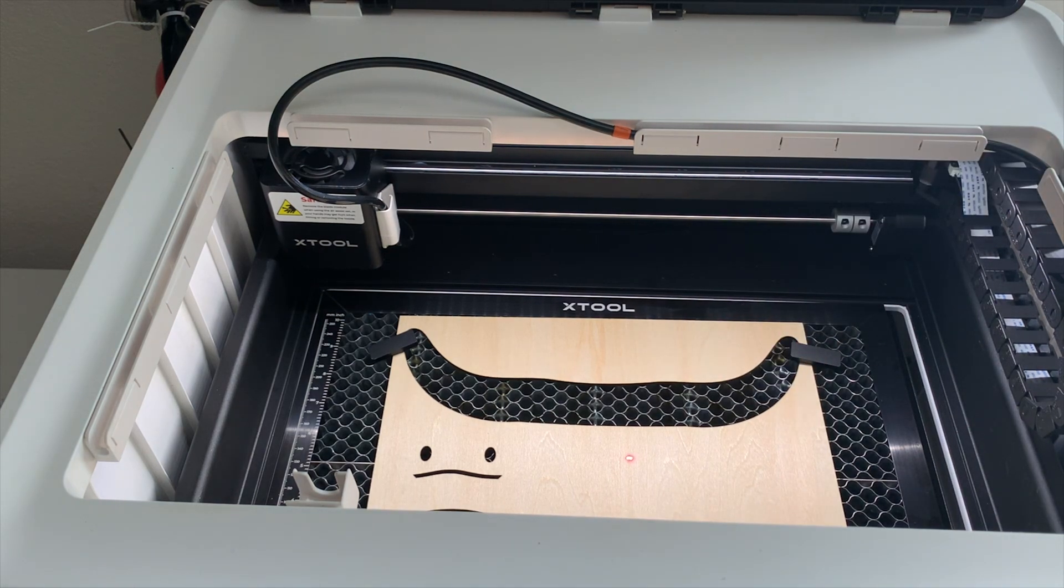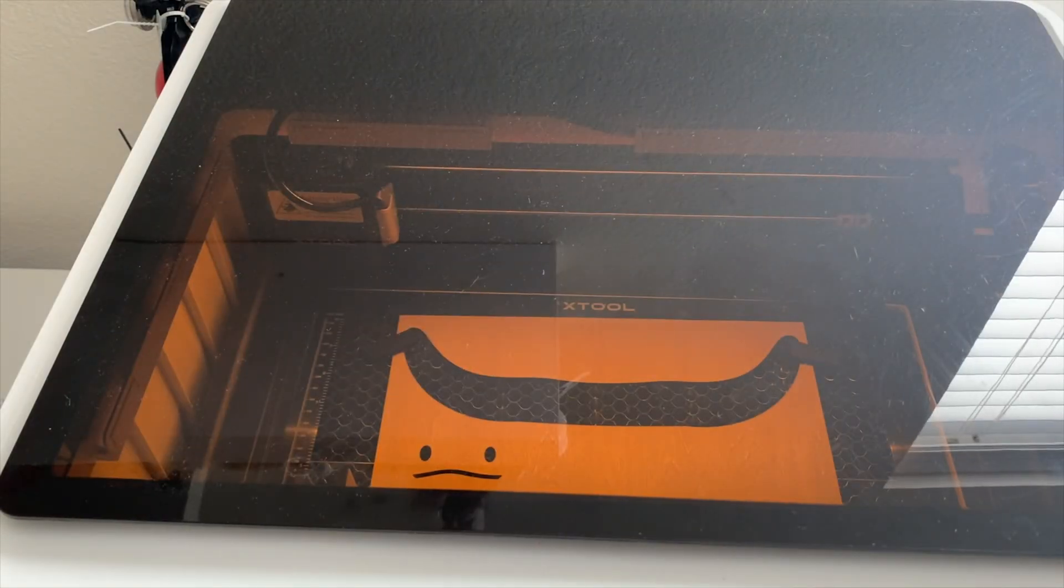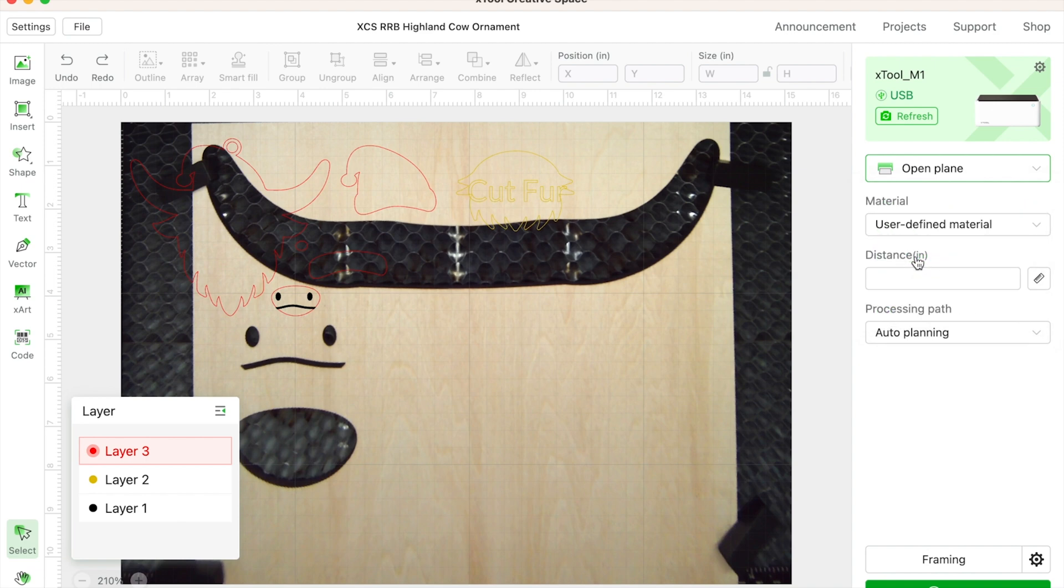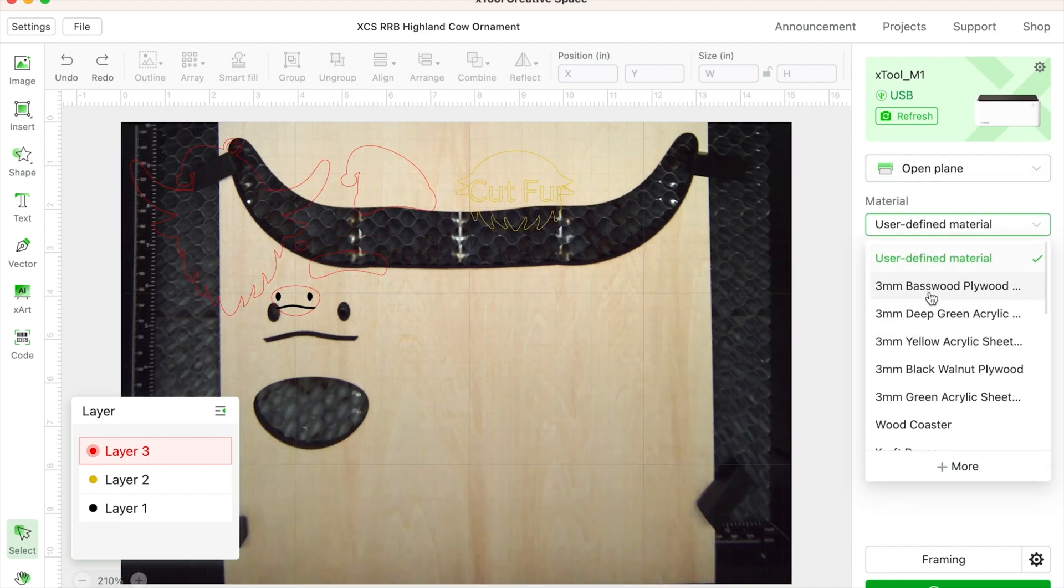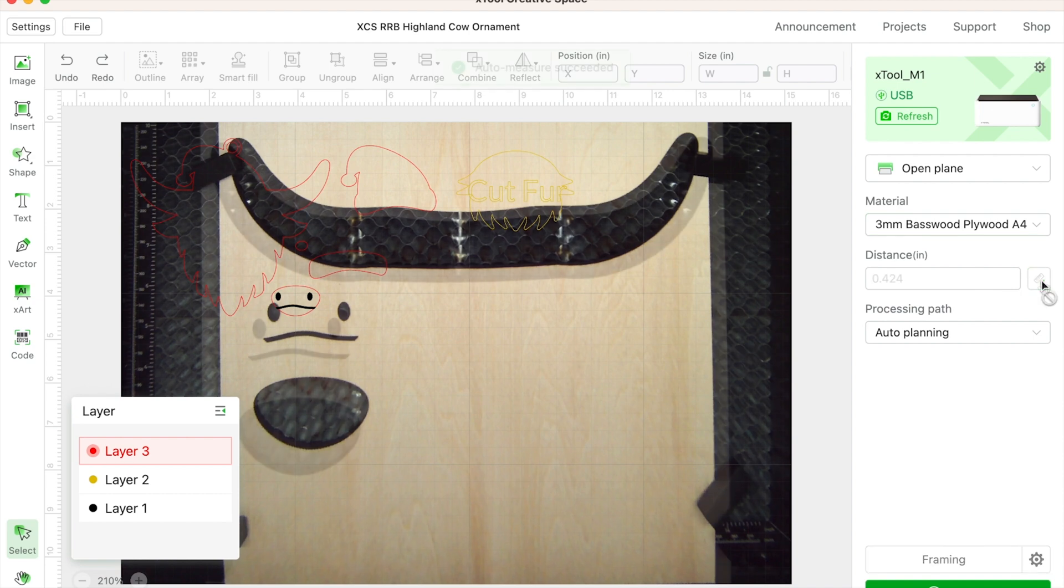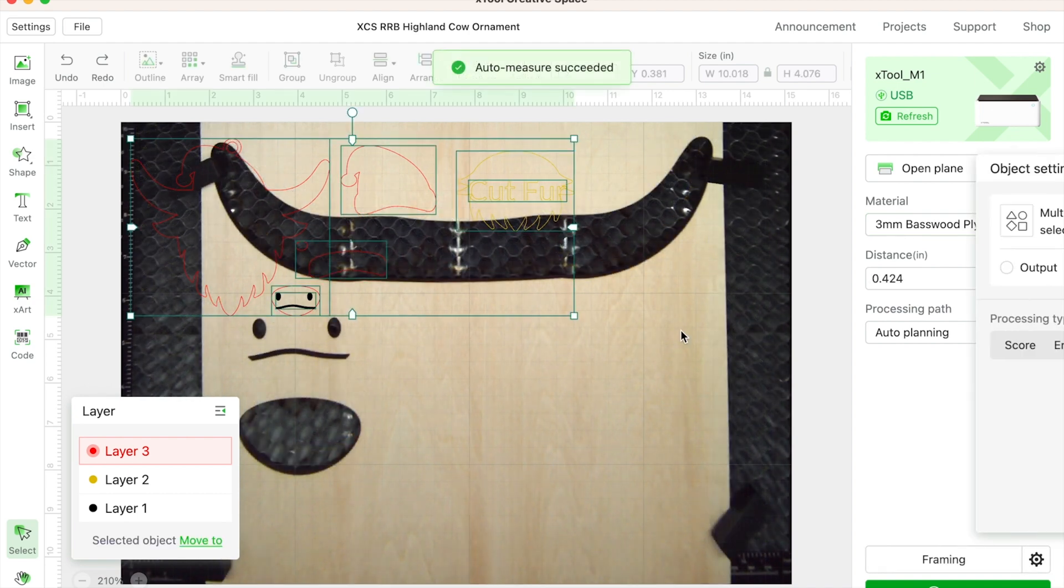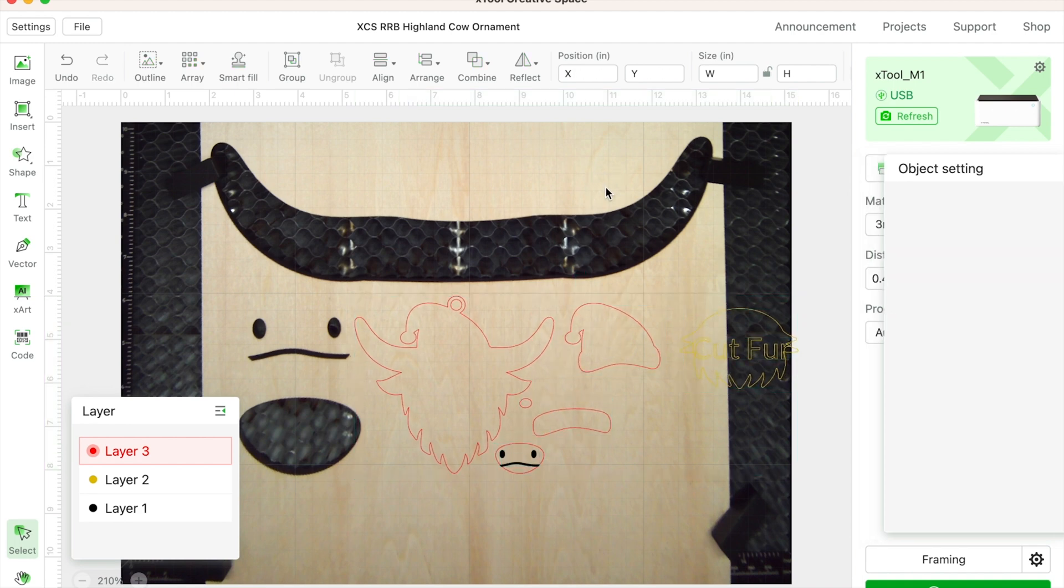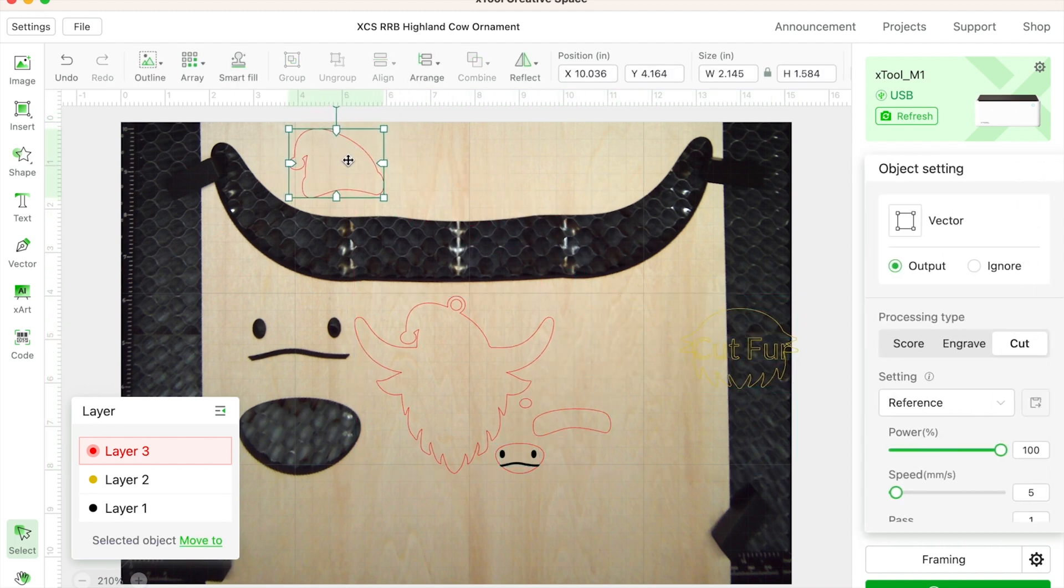I'm going to put three millimeter basswood right into my M1 and pin it down. When I close it, you can see it's taking a picture. I'm on my riser and with the honeycomb, so I choose open plain and three millimeter basswood ply.